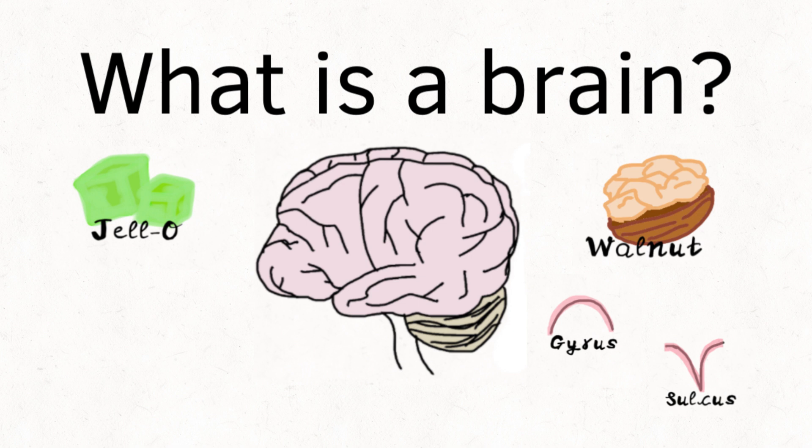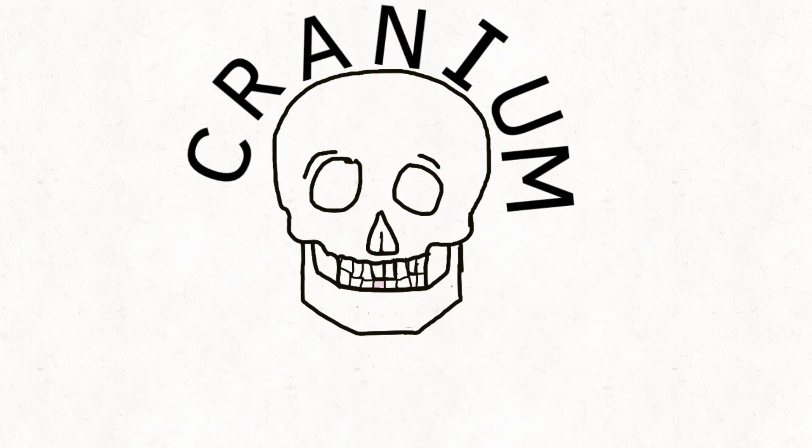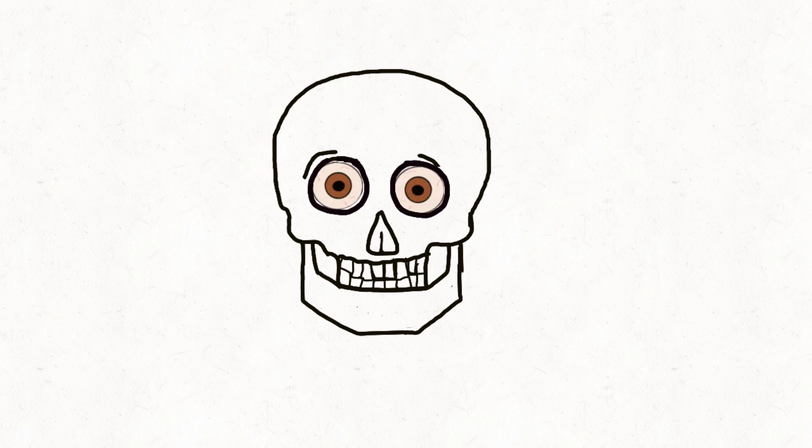It's about the same size as if you clenched both your fists together, and an adult brain only weighs about three pounds. Your brain is an important organ protected by your cranium. Your brain is what makes you you.